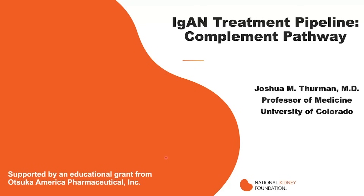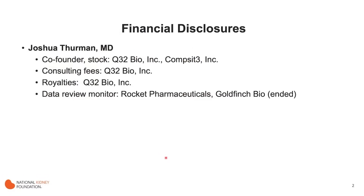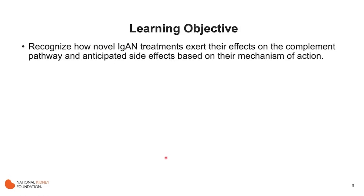Hi, my name is Joshua Thurman. I'm from the University of Colorado and what I want to talk about today is the role of the complement pathway in IgA nephropathy and how that factors into the treatment pipeline. Here are my disclosures and the objective for this session is to recognize how some novel IgA nephropathy treatments exert their effects on the complement pathway and the anticipated side effects of this class of medications based on their mechanism of action.